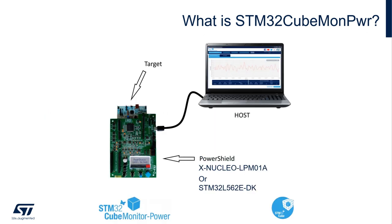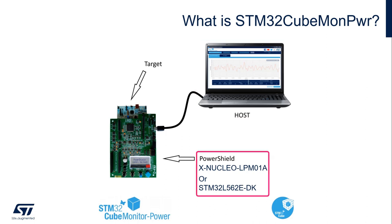The STM32 CubeMonitor Power is the software that will run on your host machine, displaying graphically the dynamic power consumption of your application. It interfaces to a hardware board like the PowerShield Expansion Board or the STM32 L5 discovery kit, to acquire dynamically the power consumption of your application. The target board you want to power profile will connect to your PowerShield using the hardware interface, or using a couple of jumpers to your target board.